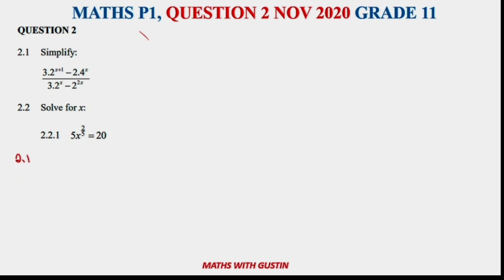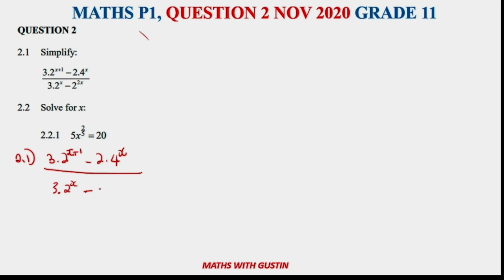At 2.1 we have: 3 times 2 to the power of (x+1), minus 2 times 4 to the power of x, all divided by 3 times 2 to the power of x, minus 2 to the power of 2x. We just need to simplify this.